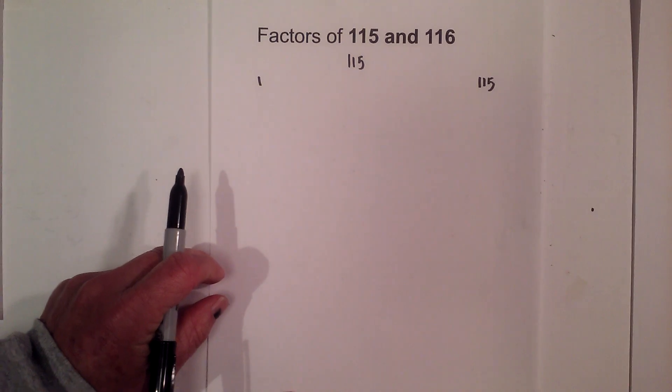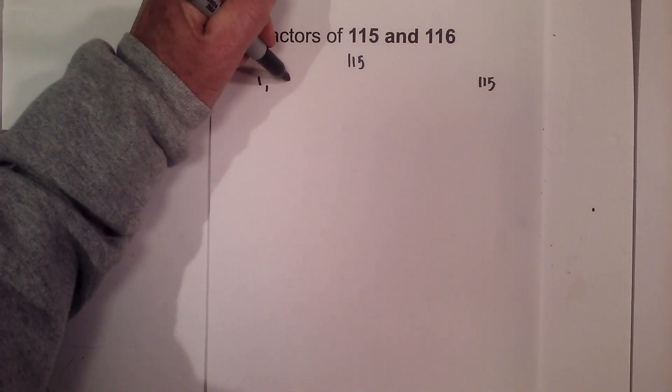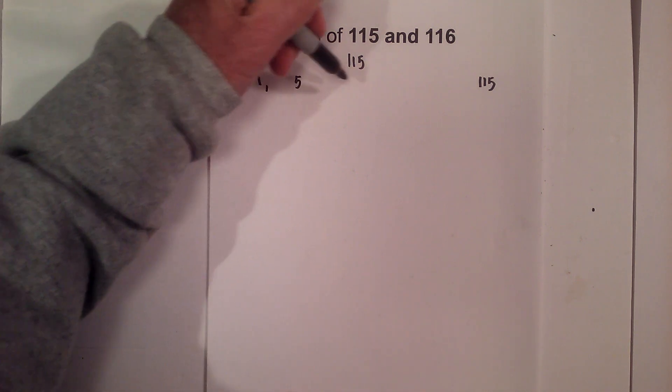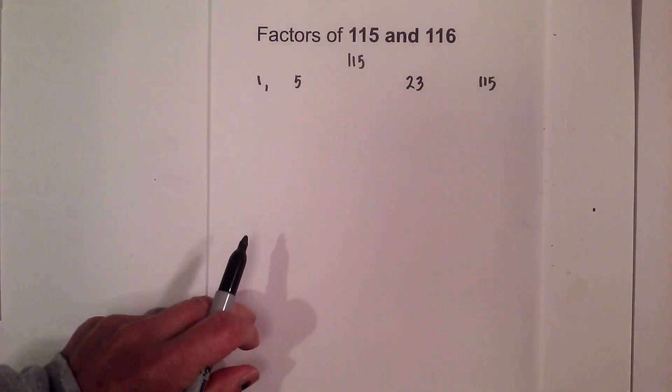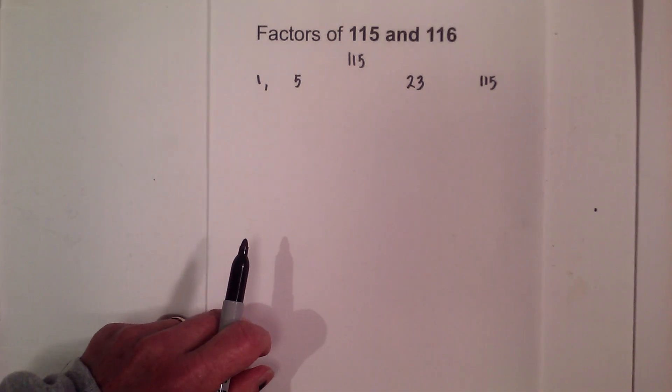2 will not go into it because it does not end in an even number, but 5 goes into 115 23 times, and 6, 7, 8, 9, or 10 will not go into it.